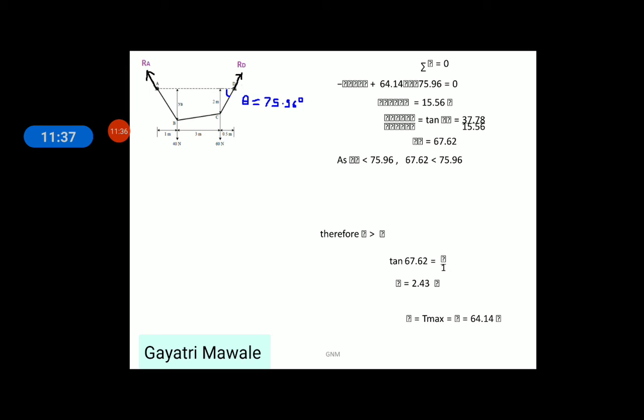Then, for same FBD, let us write down summation Fx equals to 0. Third equation of equilibrium. So, RA cos theta minus RD cos 75.96 is equals to 0. This will give me RA cos theta A equals to 15.56 N.